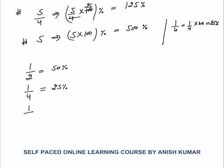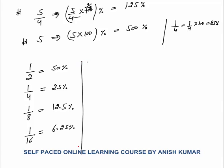One by 8 is half of 1 by 4, so it equals 12.5 percent. One by 16 is half of 1 by 8, which is 6.25 percent. So whenever 6.25 percent is given, it means 1 by 16; 12.5 percent means 1 by 8; 25 percent means 1 by 4. You should know both directions — fraction to percentage and vice versa.